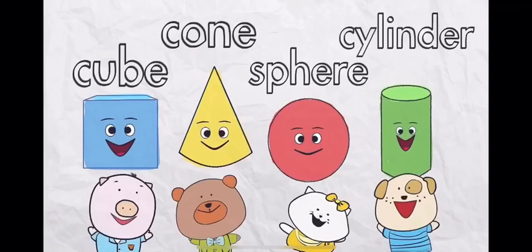The cube has flat faces which is a square. A cone has both a curved face and a flat face. Its flat face is a circle. A sphere is all curved, it has no flat faces. Cylinder has both flat and curved. Its flat face is a circle as you can see.